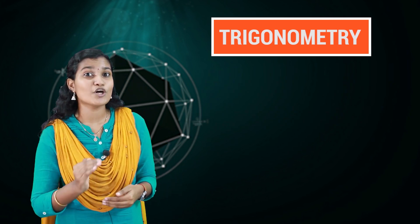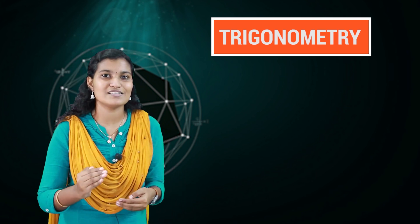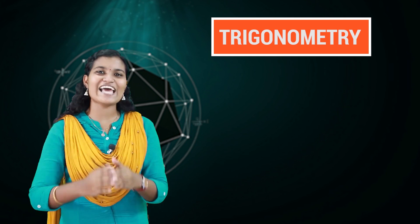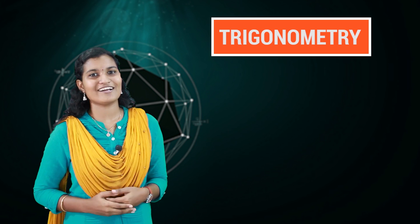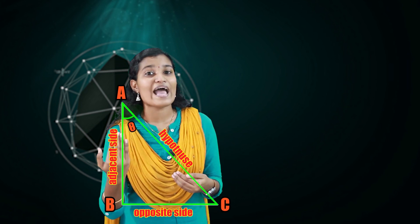In school classes we discussed trigonometric ratios, where we considered right-angled triangles. Here you can see a right-angled triangle ABC with angle theta marked. The side opposite to the right angle is the hypotenuse. The side adjacent to angle theta is the adjacent side, and the side opposite to angle theta is the opposite side. From these, we define the trigonometric ratios: sin theta equals opposite side by hypotenuse, cos theta equals adjacent side by hypotenuse, and tan theta equals opposite side by adjacent side.